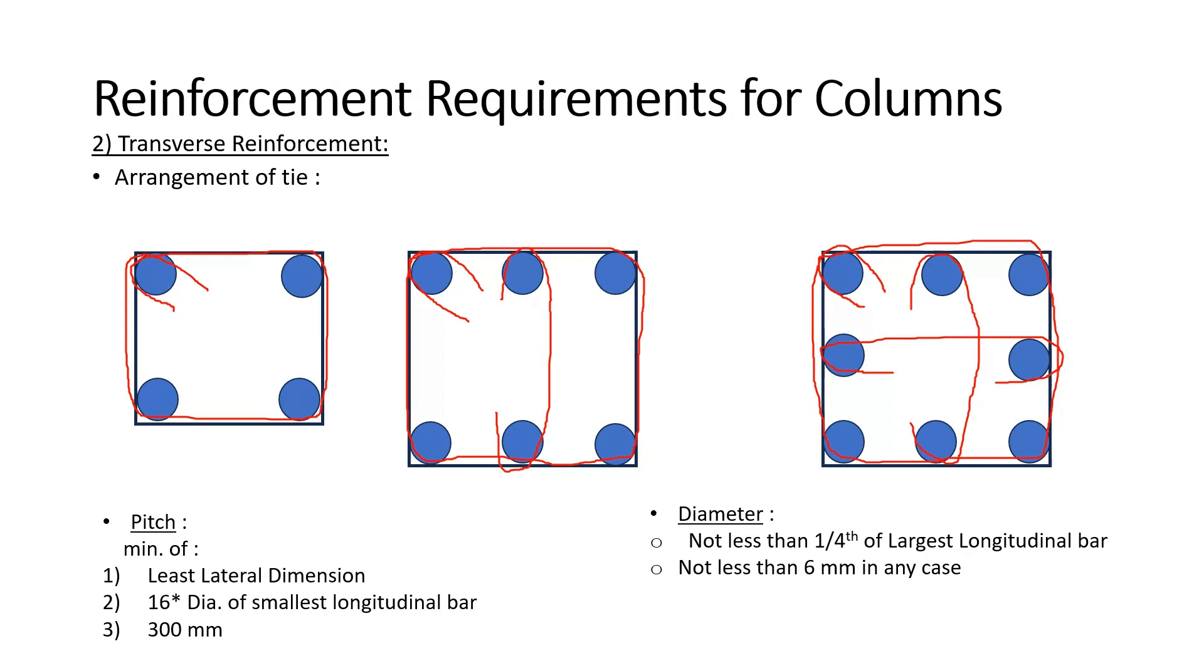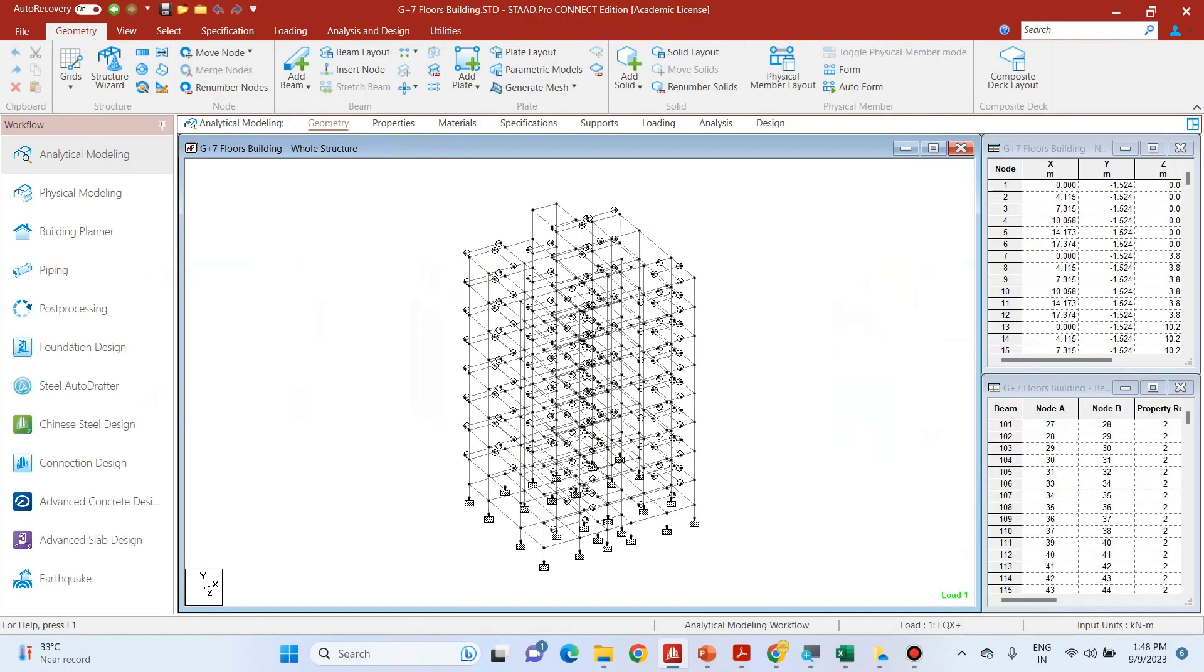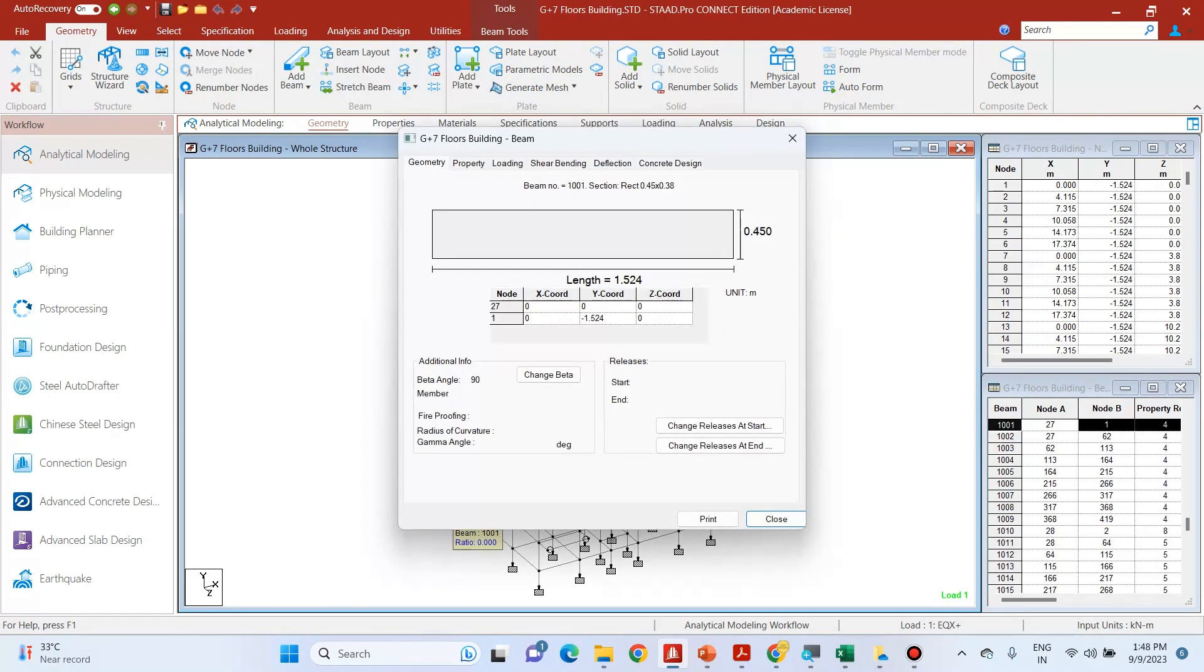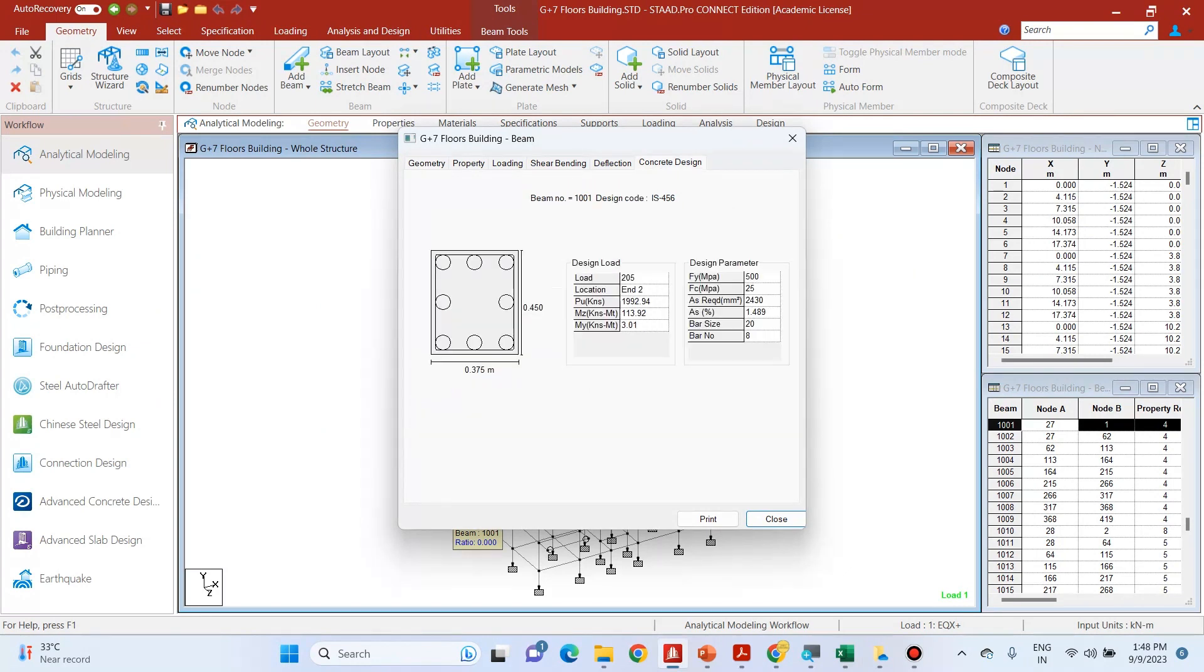So let's take an example from STAT Pro software and we will detail that column as per the provisions of IS 13920. So let me take this column. This column is 1001.